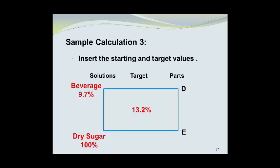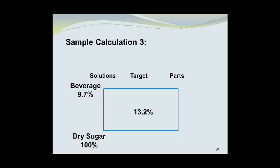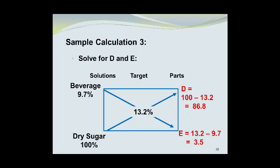We can calculate the values of D and E in the manner that we used in the past two examples. So the value of D will be 100 minus 13.2, which is 86.8. The value of E will be equal to 13.2 minus 9.7, which equals 3.5. So these are the parts of each component by weight.